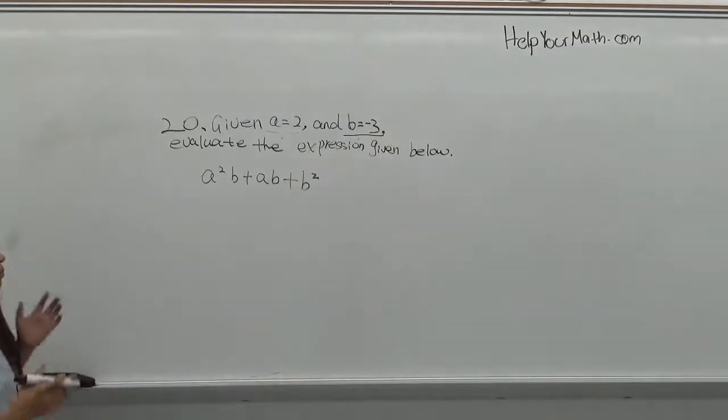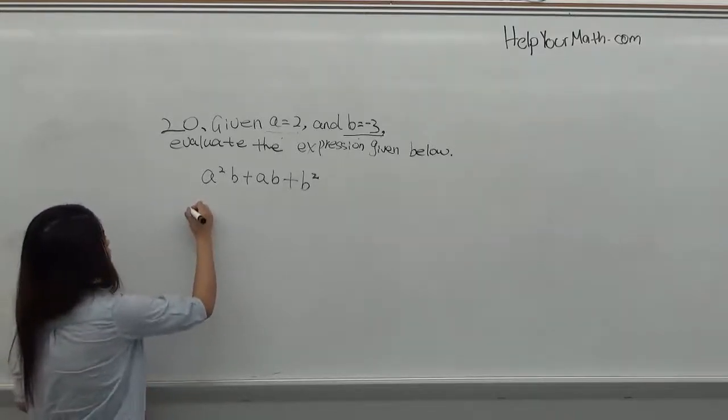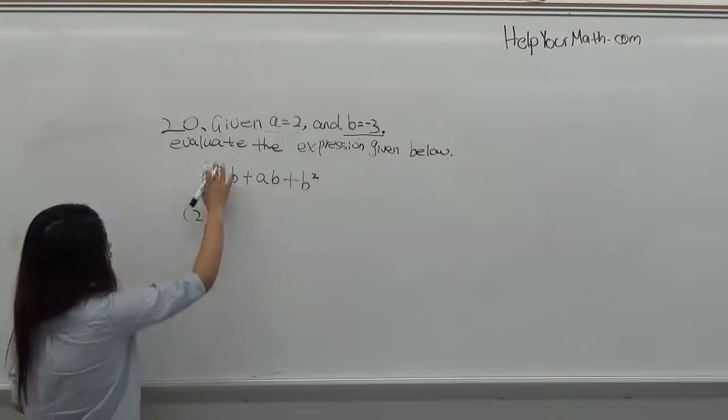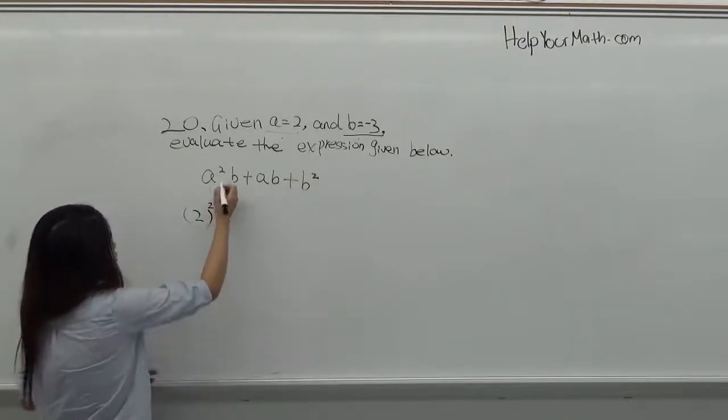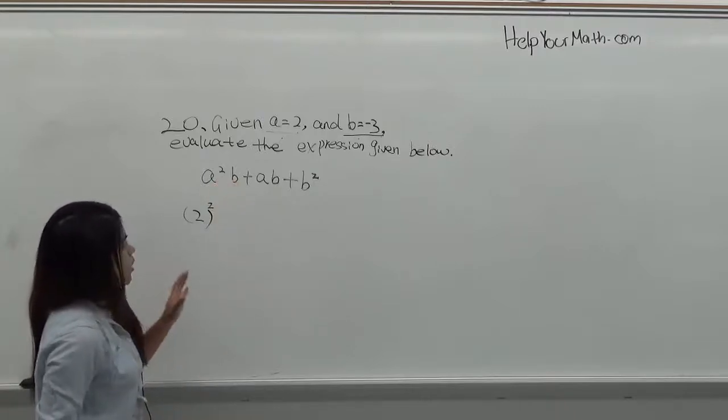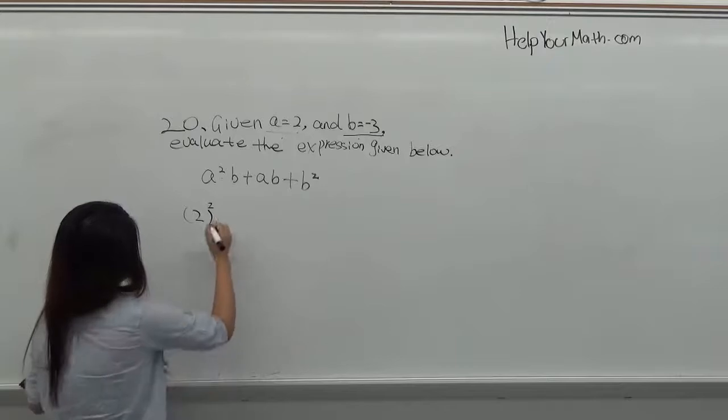So simply, you just can plug it in by bringing the numbers down. So you know that a equals 2, so you bring down a 2 and you keep square here. And even though you don't see the dot here, but that means multiply. So 2 squared multiplied by b, which is negative 3.